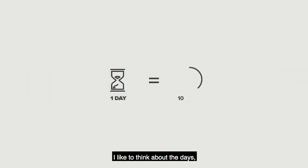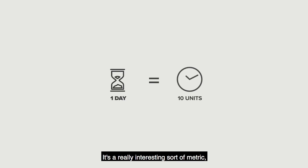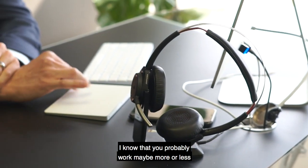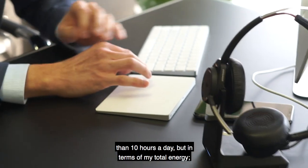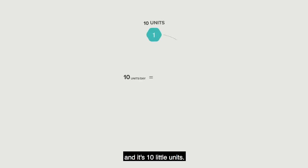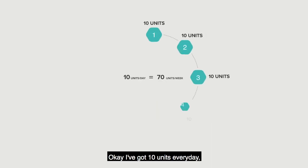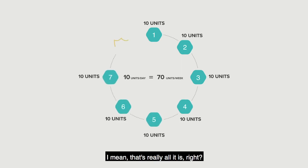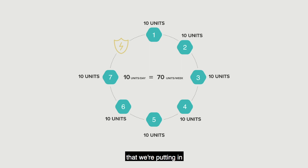I like to think about the days, and I think about one day as 10 units. It's a really interesting metric. I know there's 24 hours in a day, and you probably leave work maybe more or less than 10 hours a day. But in terms of my total energy, let's say I can deploy it into different areas and it's 10 little units. I've got 10 units every day — that's 70 units per week. Over the course of your entire life, that's really all it is: just little tiny deposits of energy that we're putting into different areas of our day.